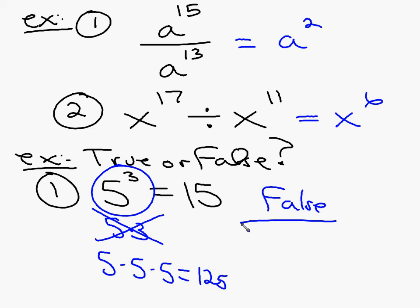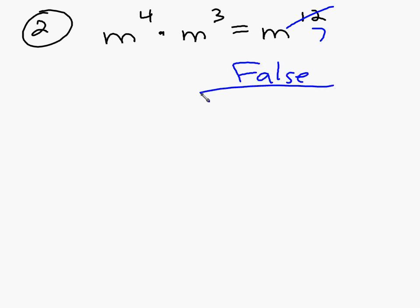So they're going to give you an expression, and then you have to determine using the properties whether it's true or not. Let's do one more. M to the fourth times M to the third equals M to the twelfth. Is that true or false? This one is also false. I don't multiply the exponents. I add the exponents. This should have been a seven. This one is also false. So you'll have some problems like that tonight, and we will stop there for today. Bye-bye.